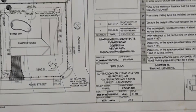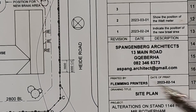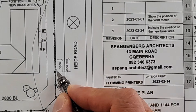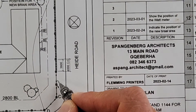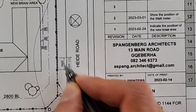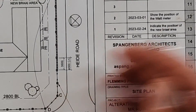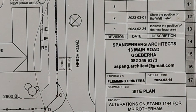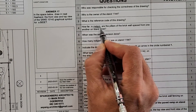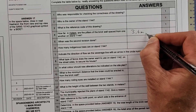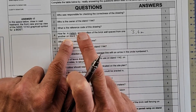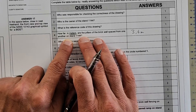How far in meters are the pillars of the brick wall spaced from one another on stand 114? The brick pillars are spaced 3.6 meters. If you've written 3600 and they've asked specifically for the answer in meters, you are going to get it wrong. Make sure you read the question clearly — the answer must be in meters: 3.6 meters. I can't overemphasize how important it is to read the question. They always ask distance and surface area in meters.